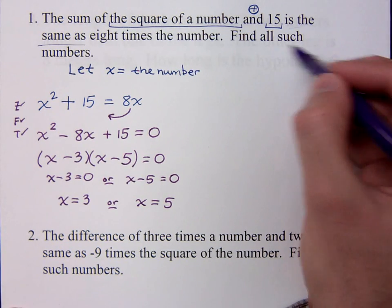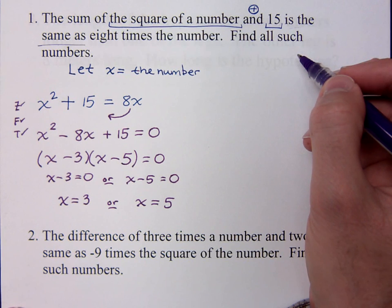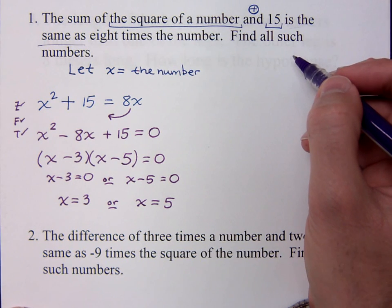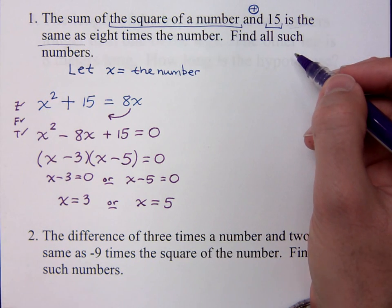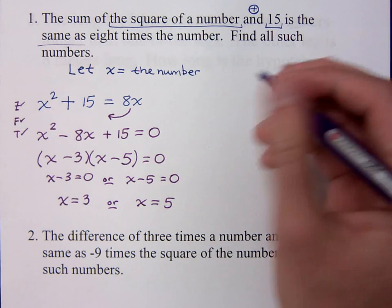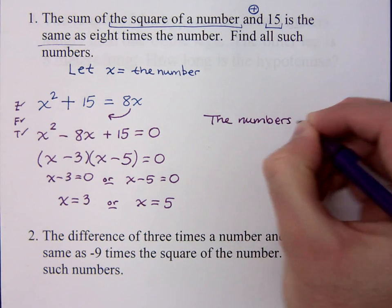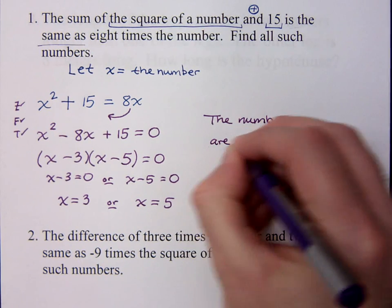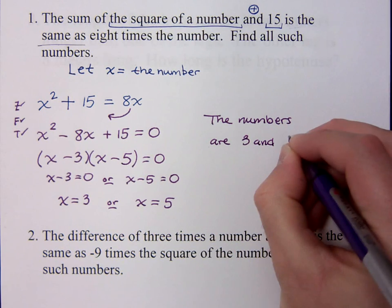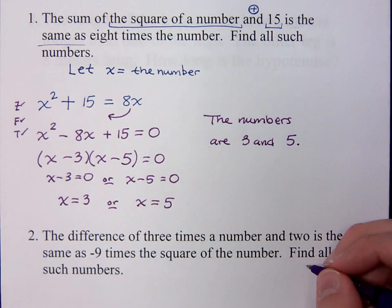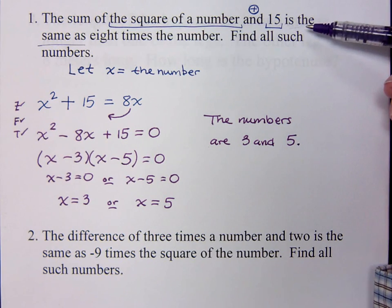Now, remember, this is a word problem, so we have to make sure we state our answer. It says find all such numbers. We're just looking for numbers here, so it could be positive, negative, decimal, fraction. Who cares? There's nothing that says we could only use positive numbers, like the situation we had the other day where we were talking about time, and we couldn't have negative time. So here we can just simply say what the numbers are. So we can say that the numbers are 3 and 5. Those are the numbers that would satisfy the relationship that is described in this word problem.